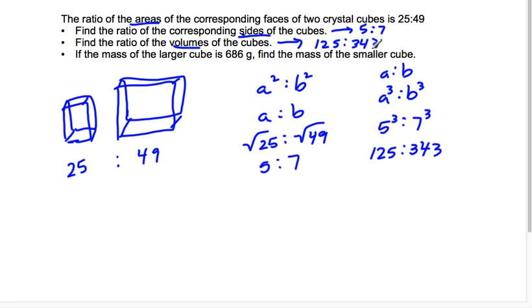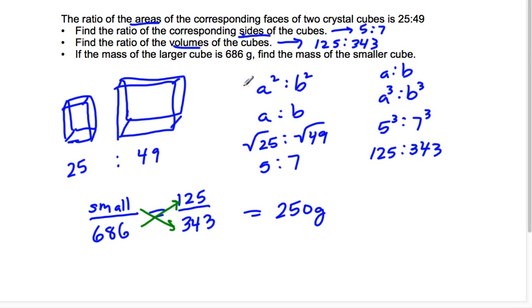And that's going to help me because if the mass of the larger cube is 686, I need to find the mass of the smaller cube. Well, I know the ratio of smaller to larger is going to be equal to 125 over 343, but I know that the larger, the mass of the larger cube is 686 grams. So then what I can do is use cross-multiplication, and that's going to tell me that my answer is 250 grams. So the mass of the smaller cube is 250 grams.